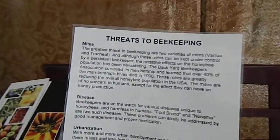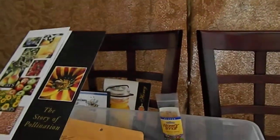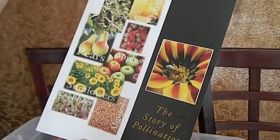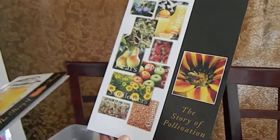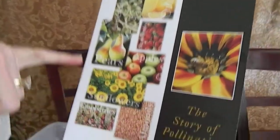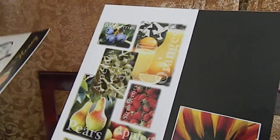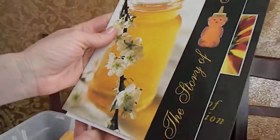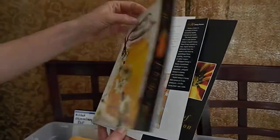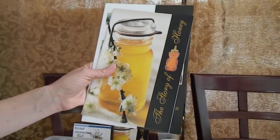Threats to beekeeping — I touched on that. We also have these great flyers from the honey board: this one is the story of pollination, and you can see all the things that need to be pollinated — sunflowers, almonds, pears, all kinds of different fruits and vegetables. This one is the story of honey — it's a really nice color brochure. It will be hard to show kids as a whole big group, but you could use it in smaller groups.